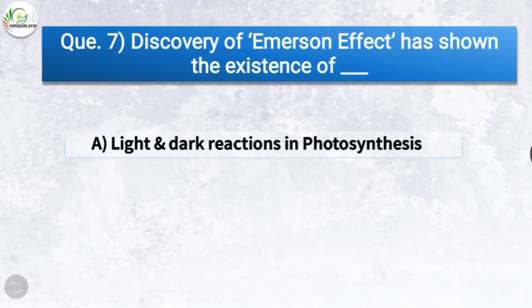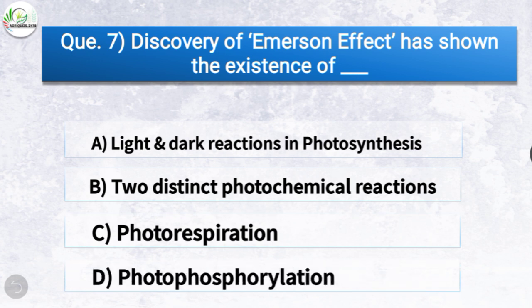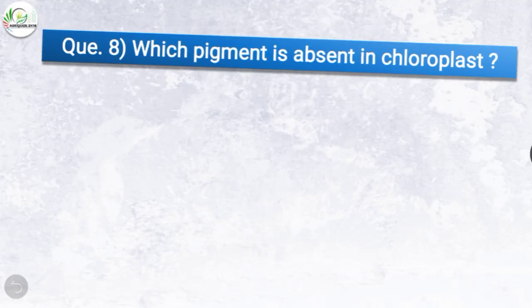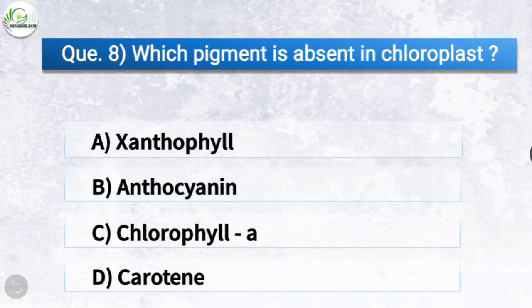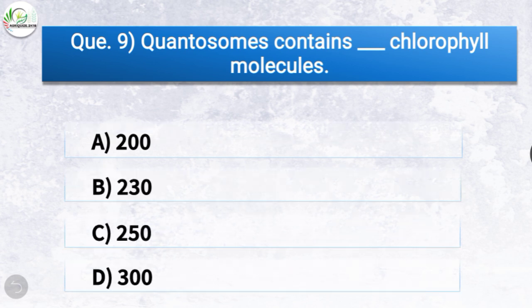Question 7: Discovery of the Emerson effect has shown the existence of what? Options: light and dark reactions in photosynthesis, two distinct photochemical reactions, photorespiration, or photophosphorylation. The correct answer is option B — two distinct photochemical reactions. Question 8: Which pigment is absent in chloroplast? Options: xanthophyll, anthocyanin, chlorophyll a, or carotene. The correct answer is option B, anthocyanin. Question 9: Quantosomes contain how many chlorophyll molecules? The correct answer is option B — 230.